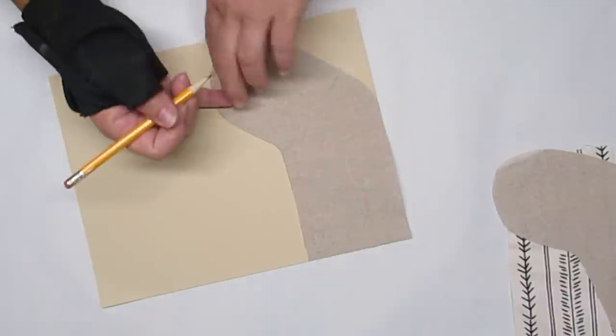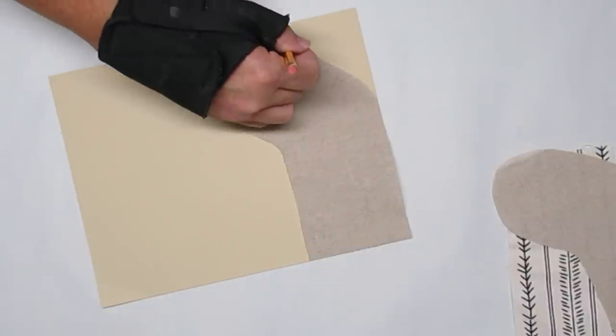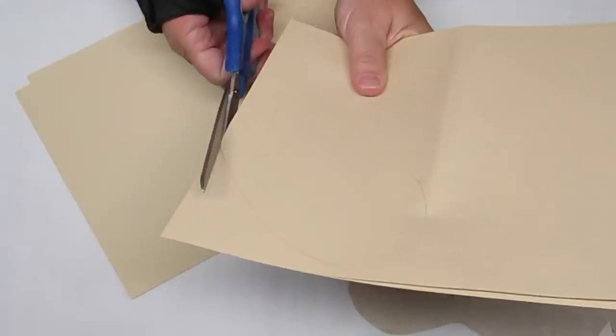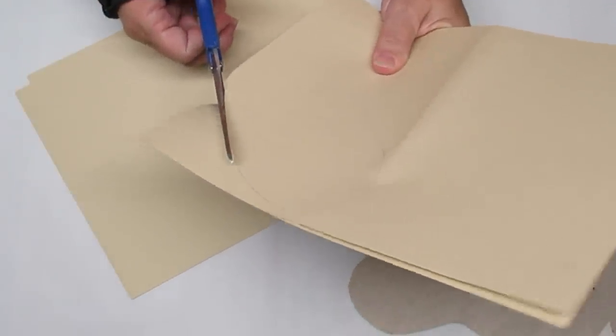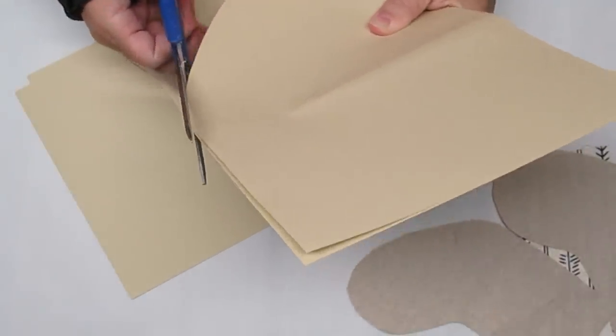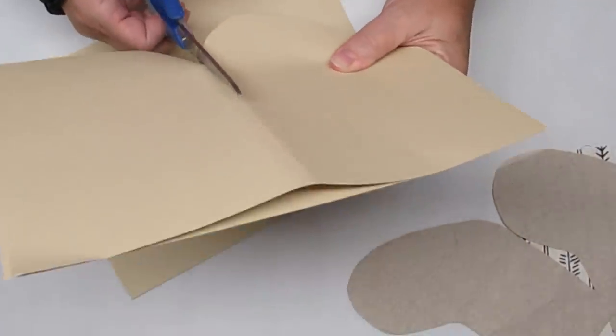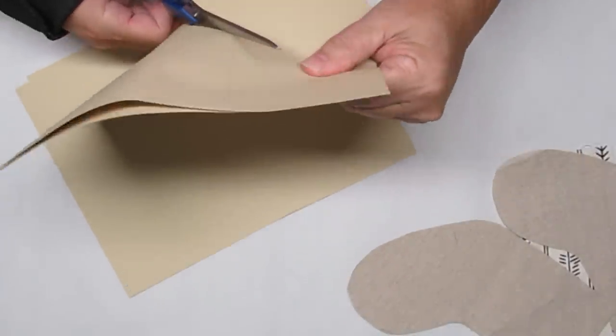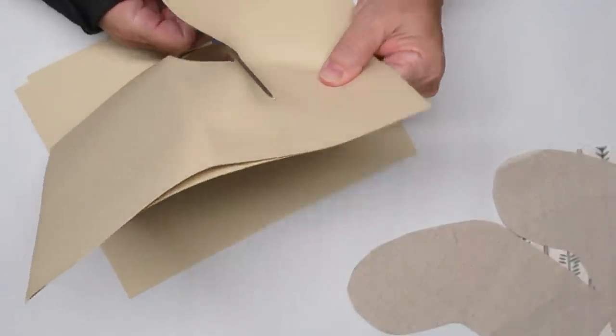If you do invest in a pair of fabric scissors, make sure that you don't ever cut anything other than fabric with them. If you cut paper or plastic, it's going to dull the blade and really make them unusable for fabric. You're going to see me switch back and forth between my blue pair, which is for paper and plastic, and my red pair, which is for fabric.